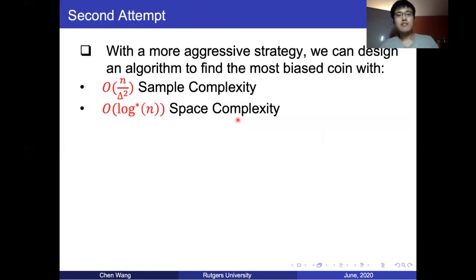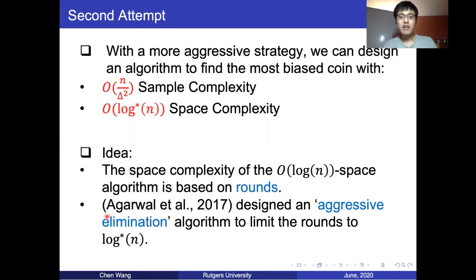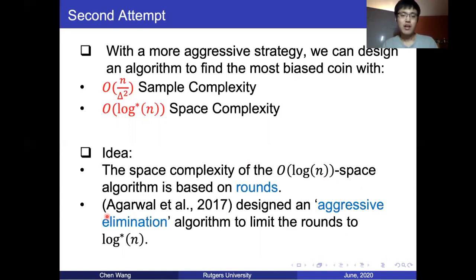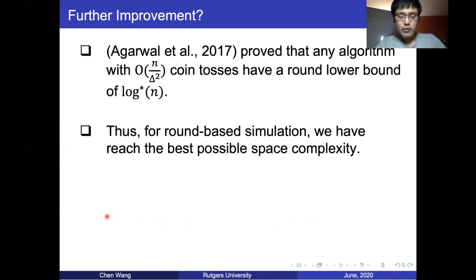We also improved the space complexity to O(log* n). The idea is that since we use a round-based simulation for the O(log n) space algorithm, we looked into the aggressive elimination mechanism of Agarwal et al. 2017. The aggressive elimination algorithm uses only O(log* n) rounds, so with the same idea we get an O(log* n) space complexity algorithm. Note that log* n is a very small number — for any realistic input, five to six levels will be enough.